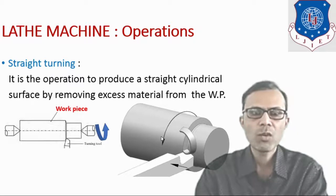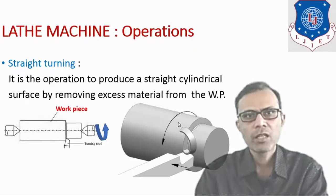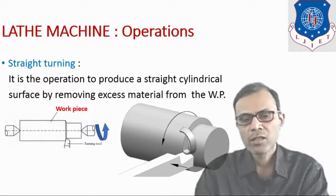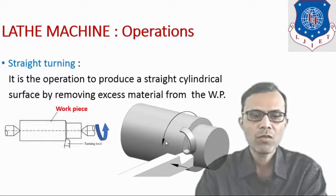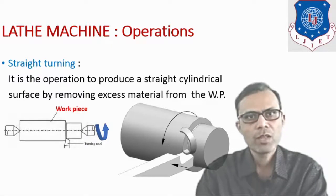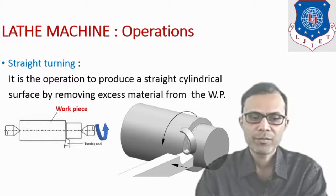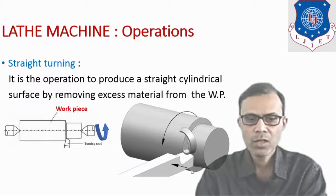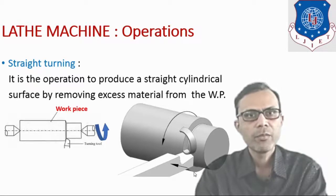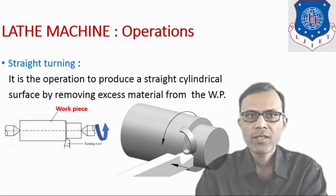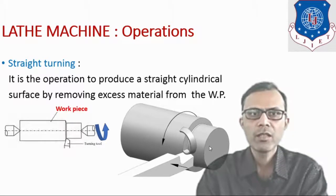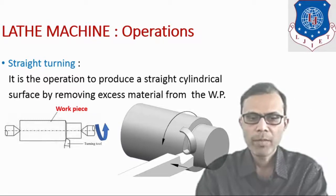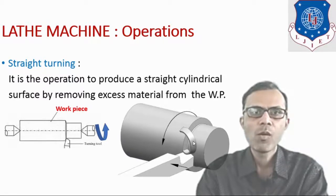When we look at the workpiece from the tailstock side direction, it will be revolving in an anticlockwise direction. Always, in all kinds of operations, the workpiece will be revolving in the anticlockwise direction. The cutting tool is provided the feed motion parallel to the axis of the machine — that is a longitudinal feed — and the excess material will be removed by the cutting action in the form of chips.